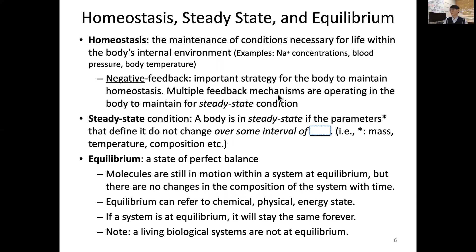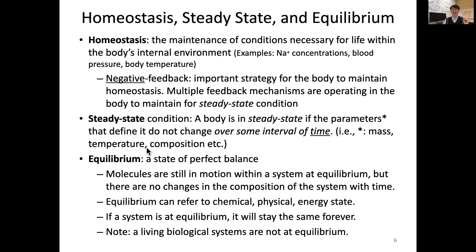Multiple feedback mechanisms are operating in our body to maintain our steady state condition. We call a body in a steady state when the parameters that define our body do not change over a certain period of time — for example, mass or temperature. Another descriptive word for this is equilibrium, which is a state of perfect balance, and we need to be careful using equilibrium versus steady state.